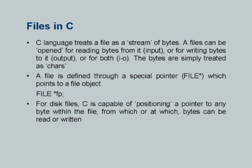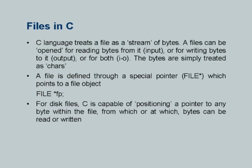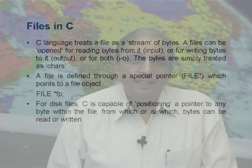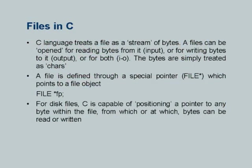C language treats a file as a stream of bytes — that is why in C++ you see ifstream, iostream, etc. A stream of bytes is like a stream of a river. A file can be opened for reading bytes (input operation), writing bytes (output operation), or both. The bytes are simply treated as characters. Since char in C is equivalent to int, when you read bytes from a stream you actually get int values. A file is defined through a special pointer: FILE *fp.